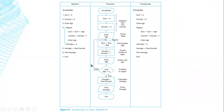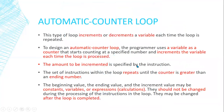Repeat-until is very similar to while with two differences: at least the instructions will be executed one time regardless of the condition, and we repeat while the condition is false and stop when the condition is true. Next class will be about the automatic counter loop. Thank you, and see you next time, inshallah.